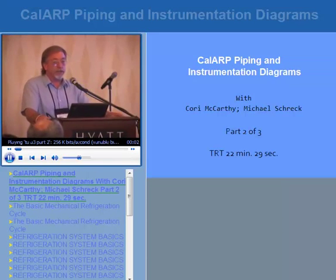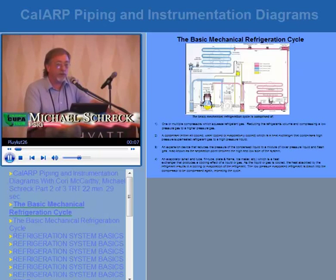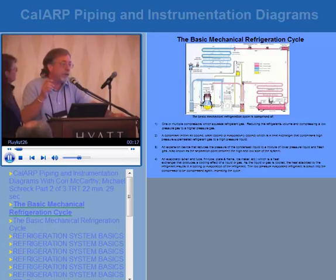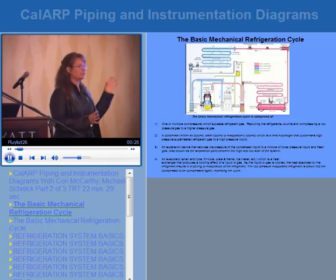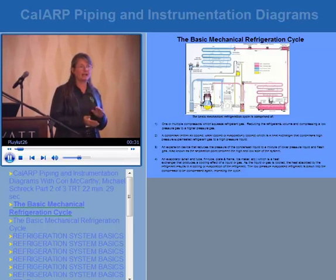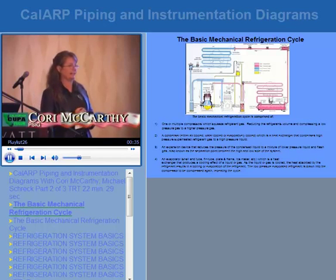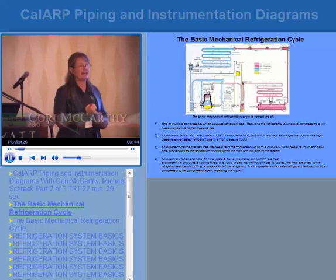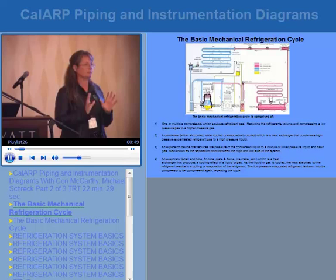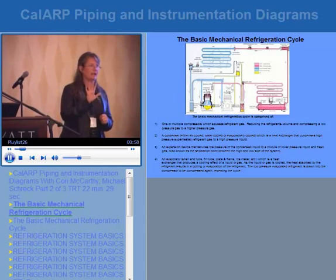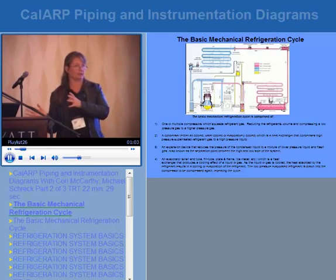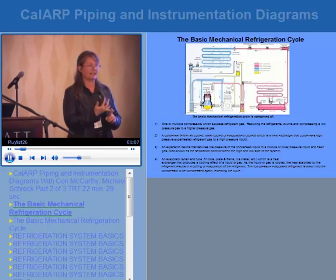To understand P&IDs, you have to understand the basic refrigeration system and what the components look like. One of the most common findings is that P&IDs have not been updated. A simple check is to look at the types and quantities of equipment. When preparing for a site visit, request a copy of their P&IDs a week after your letter. In the three weeks you prepare, count the major components: compressors, condensers, evaporators, pressure vessels, and pumps.